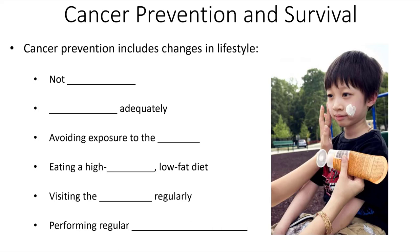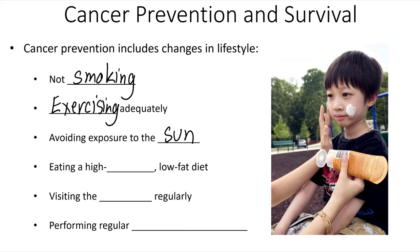Cancer is very difficult to treat, and this means that prevention is so important. Cancer prevention can include lifestyle changes such as not smoking, exercising adequately, avoiding excessive exposure to the sun, and eating a high-fiber, low-fat diet. And these last two aren't so much for preventing cancer but for promoting early detection: visiting the doctor regularly and performing regular self-examinations.